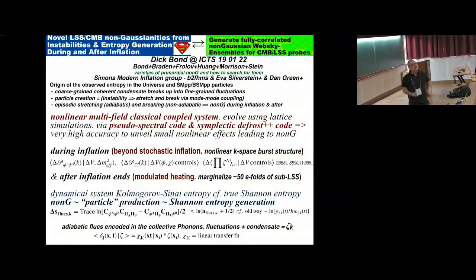After inflation ends, you have to connect really small scales, a co-moving centimeter, to make something that's observable on very large scales, but that is just totally natural. It's modulated by fields that are present as long as they're light. And if you want to connect to large-scale structure, you actually have to marginalize over about 50 e-folds of sub-large-scale structure. We put the whole framework of all of this now into a relationship of dynamical system theory using Kolmogorov-Sinai entropy and a true entropy, Shannon's entropy. Non-Gaussianity particle production is, in fact, relatable to the Shannon entropy generation.